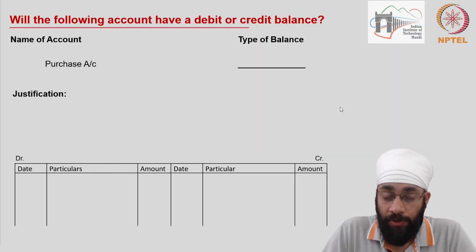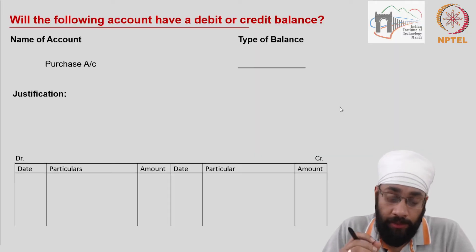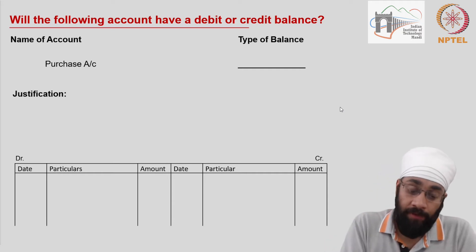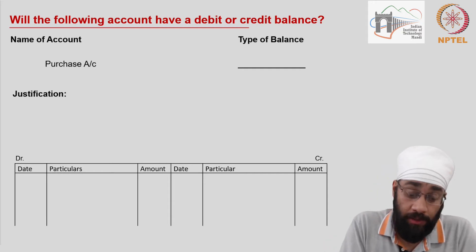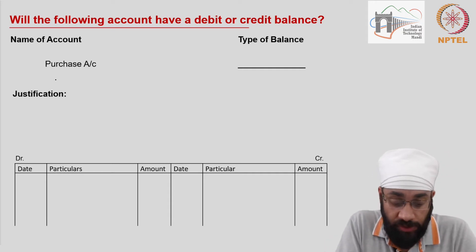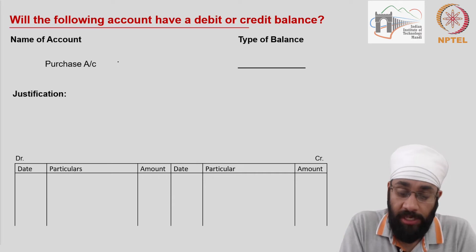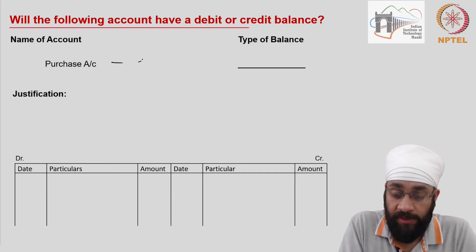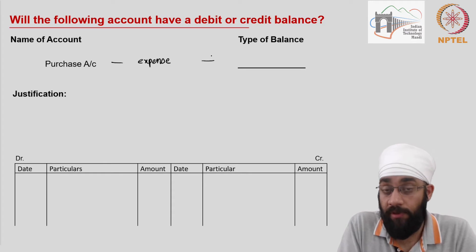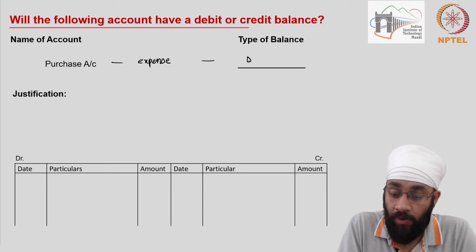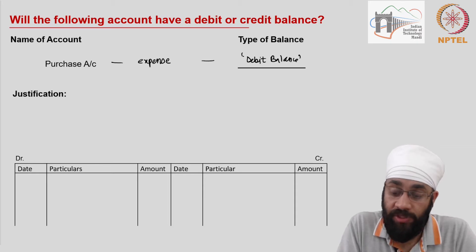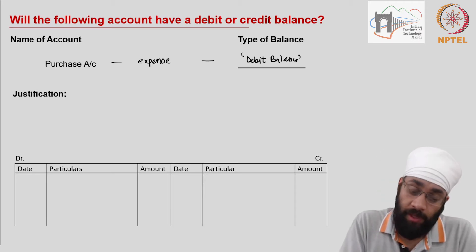This is a continued video tutorial on identifying the type of balances — debit or credit. We are looking at the purchase account. Purchase account is considered to be an expense item, and we've learned that all expenses are always going to have a debit balance. We're going to take a minute to justify this.